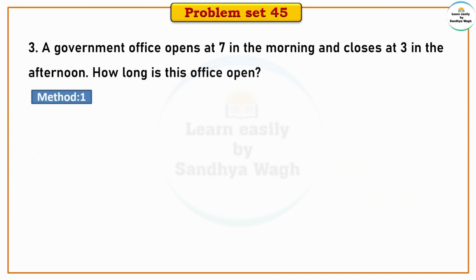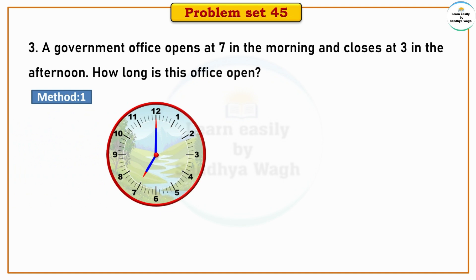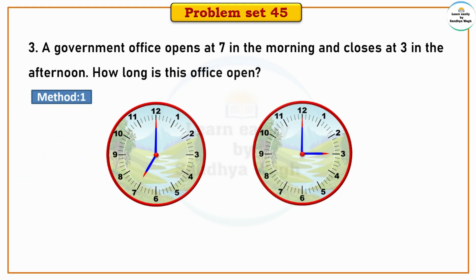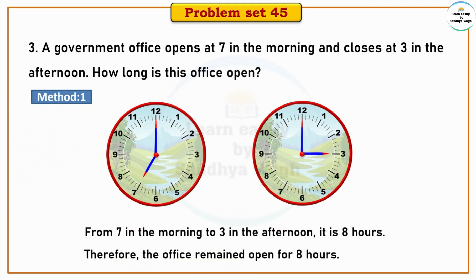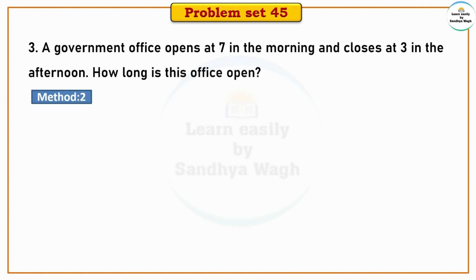First method: The office opens at 7 o'clock in the morning and closes at 3 o'clock in the afternoon. Counting from 7 o'clock to 3 o'clock gives us 8 hours. So, from 7 in the morning to 3 in the afternoon, it is 8 hours. Therefore, the office remained open for 8 hours.